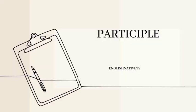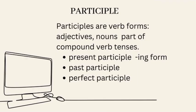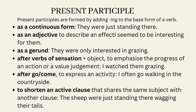Participles are verb forms that can function as adjectives, nouns, or as part of compound verb tenses. There are three kinds of participles in English grammar: present participle (the -ing form), past participle, and perfect participle. Present participles are formed by adding -ing to the base form of a verb. They can be used as a continuous form in tenses, e.g. past progressive — 'They were just standing there.'